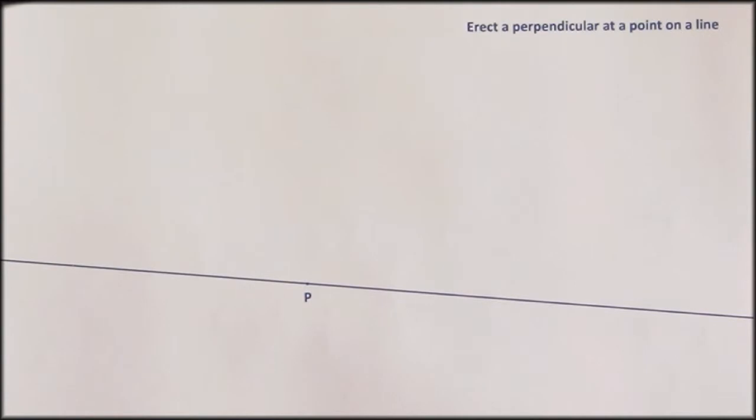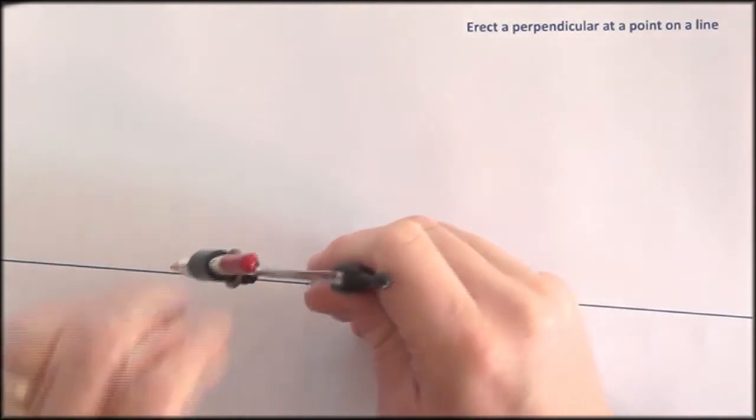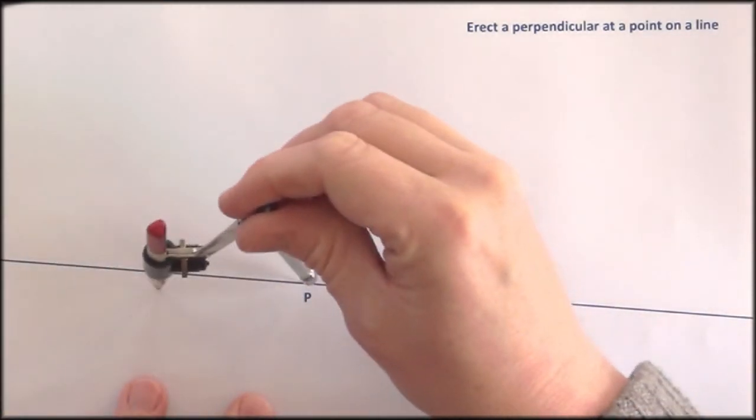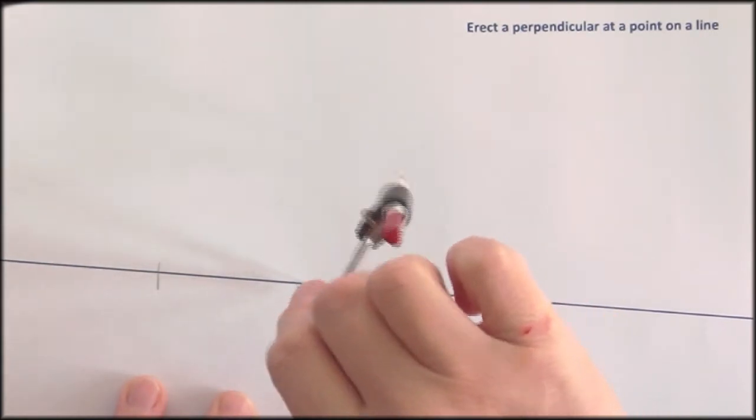And again this makes use of the perpendicular bisector construction. So first of all I need a couple of points to work with. I'll set my compass to a sensible radius, point on P, and draw some arcs either side of P to intersect the line.